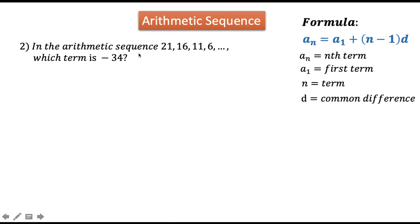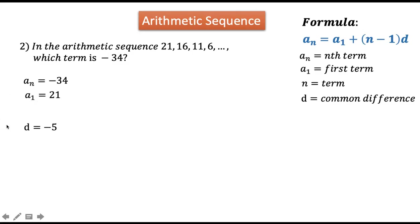Given number 2: in the arithmetic sequence 21, 16, 11, 6, and so on, which term is negative 34? Step 1: lay down the given. Our a sub n is negative 34. Our a sub 1 is the first term, which is 21. Our d equals negative 5, found by subtracting each term by its preceding term — 16 minus 21 is negative 5. We are going to find n, since that is what the problem asks.